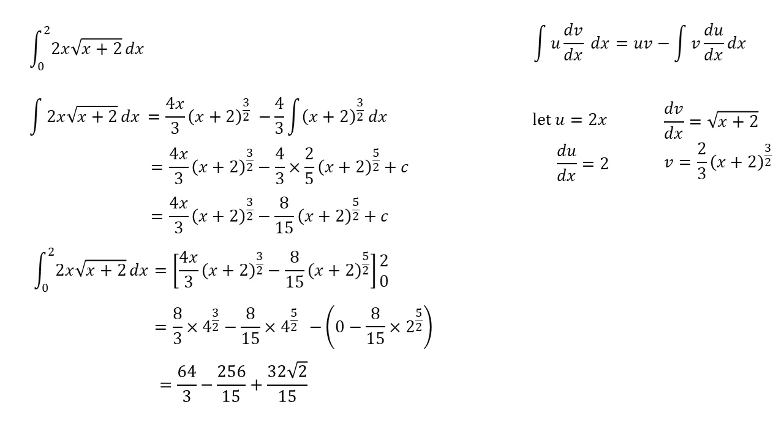Simplifying this gives us 64 over 3 for the first term minus 256 over 15 plus 32 root 2 over 15, which all comes together to give a final answer of 32 over 15 times 2 plus root 2.